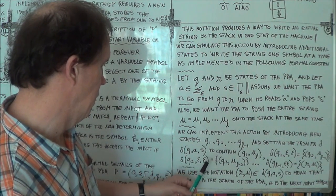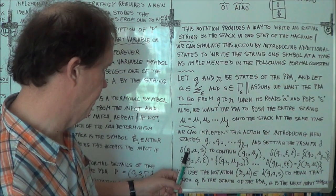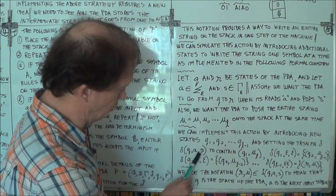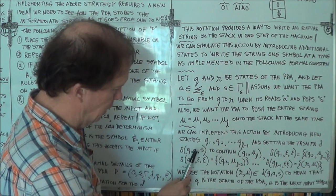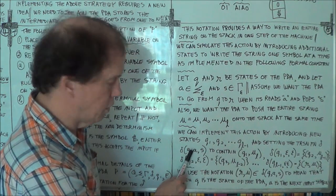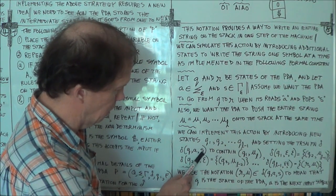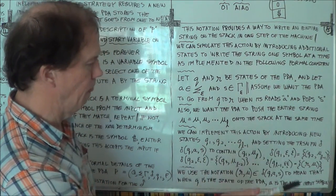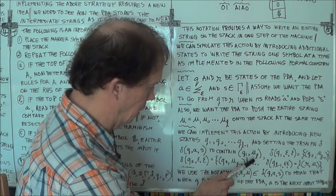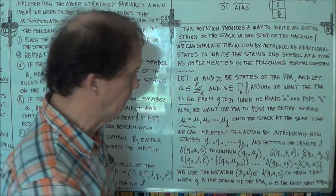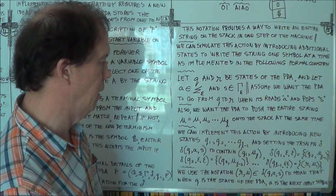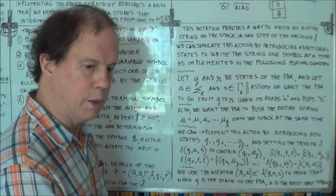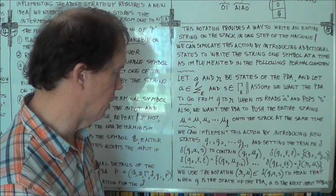And it's done in the following way. So now the transition rule, it's a triple. Remember? The current state, the current symbol being read in the input string, and the current symbol at the top of the stack. And that will map into an ordered pair, where the first member of the ordered pair is the next state.